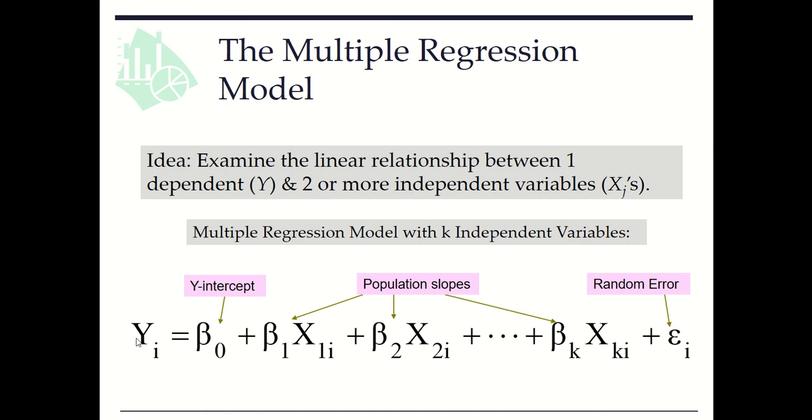So here we have yi equals y-intercept beta 0 plus beta 1, which is a population slope, times x1i plus beta 2 times x2i and so on, to beta k times xki plus a random error term εi.